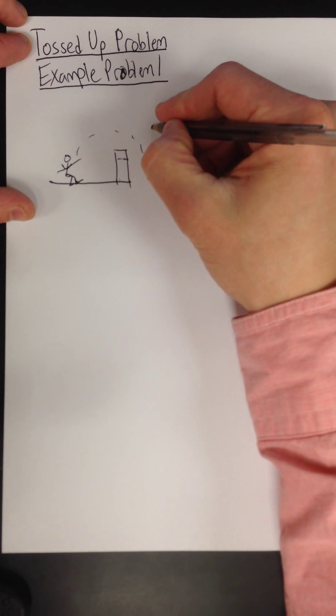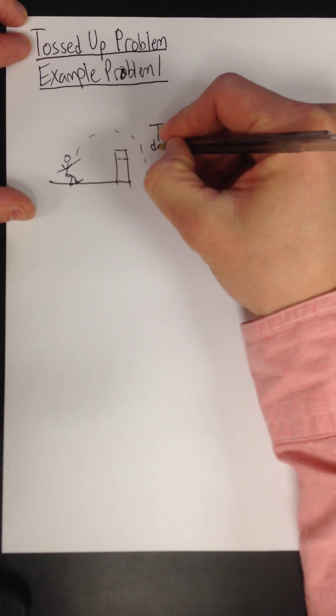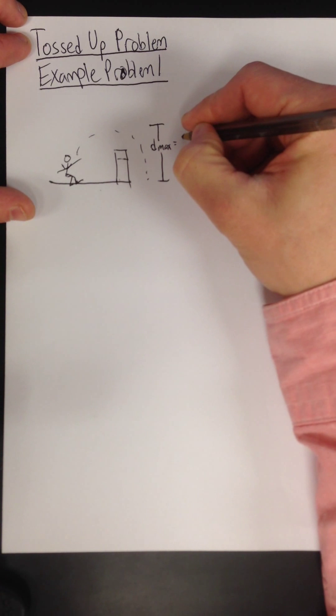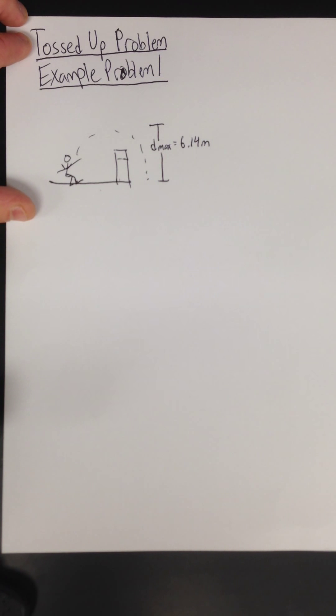We could label the height he gets to as his maximum height, it tells us. So I'm going to write D max equals 6.14 meters.